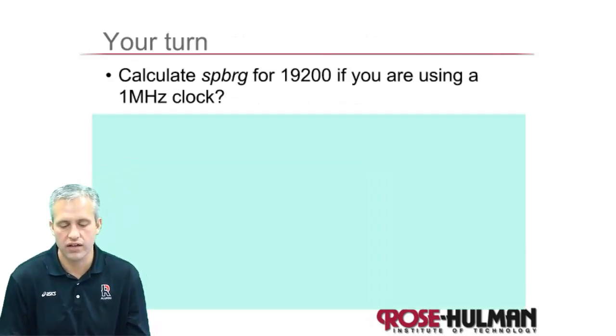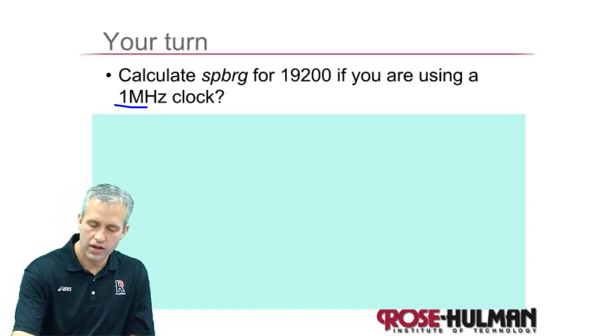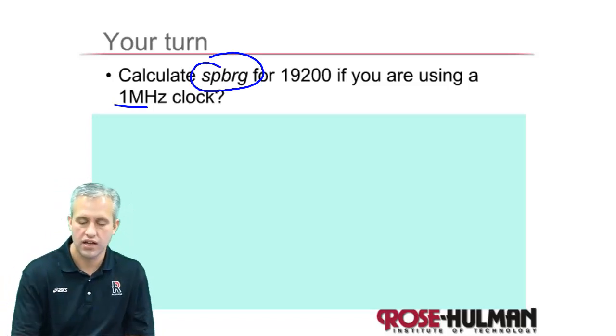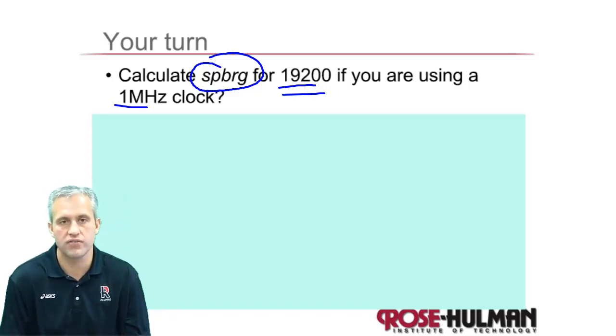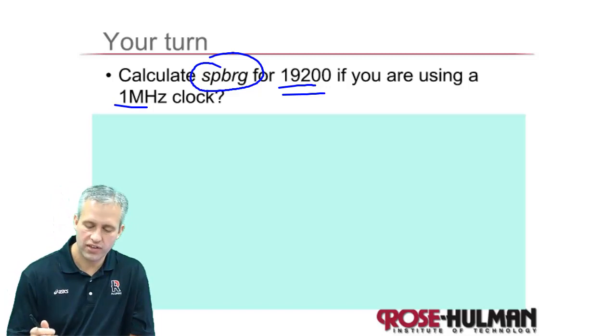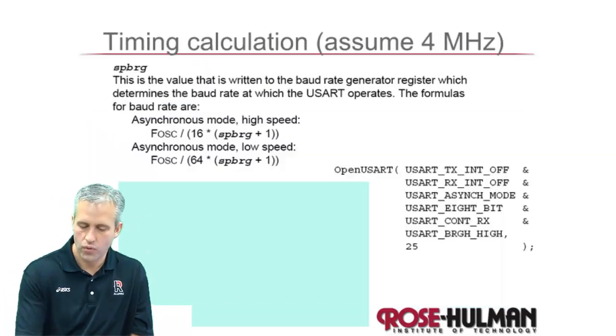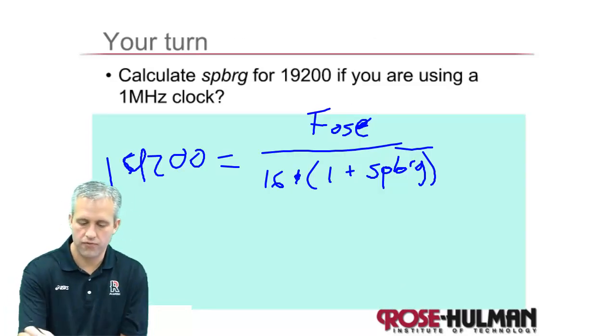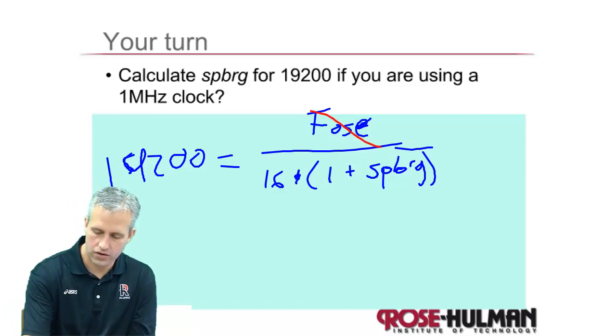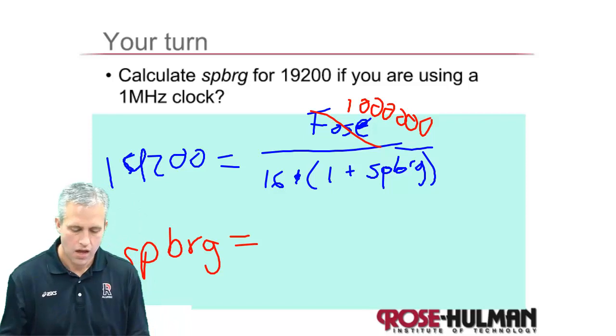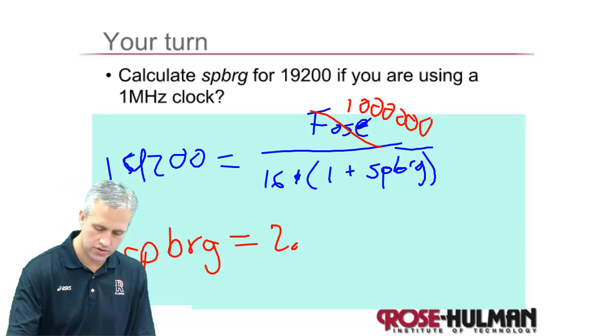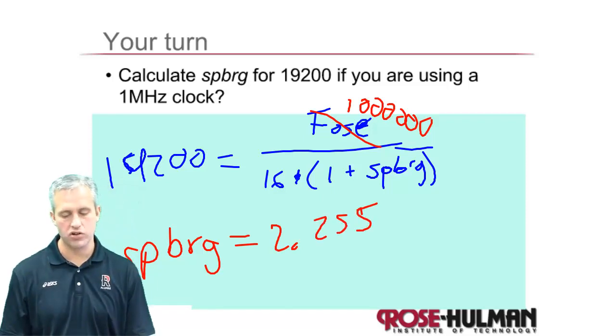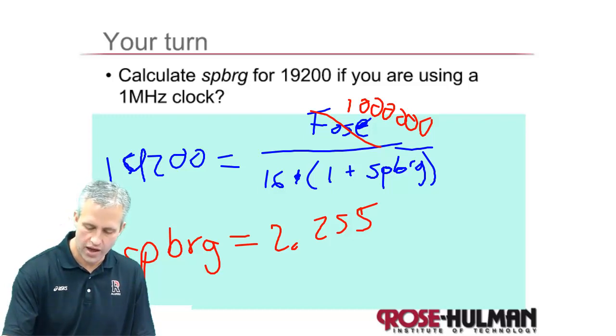So your turn. So calculate, assuming you have a 1MHz clock, what is SPBRG? So this is the reverse of what we just did if you wanted 19.2. So pause the video. See if you can figure out what this thing should be in that formula. All right. So I'm going to solve it as well. My first thing I have to decide is whether I want to use high speed or low speed. We pretty much always use high speed. So I need this formula here. So I'm going to go ahead and copy that into the next slide. So I start with this formula. My frequency in my oscillator here is 1MHz. So I just have to solve this guy for SPBRG. And so I'll just do the math on this guy. I think it works out to be a 2.255. Of course, SPBRG has to be an integer. So you would round to the nearest integer. So I would use 2.